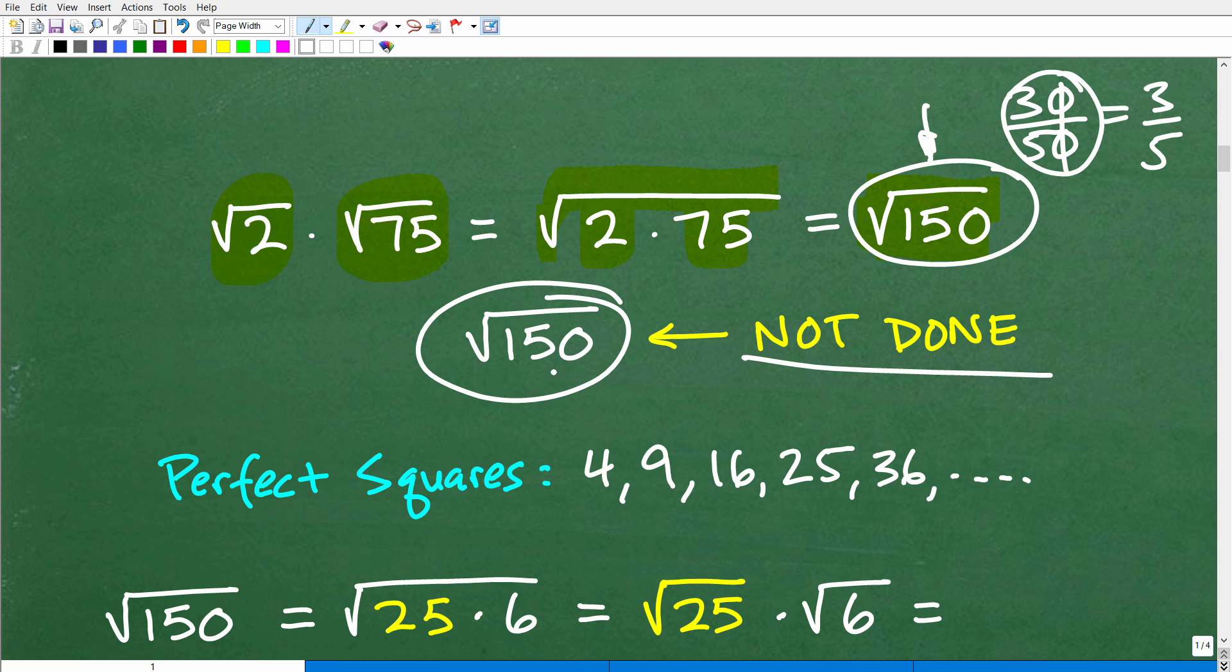And to determine whether we can simplify this, you need to be thinking about perfect squares. So these are perfect squares: 4, 9, 16, 25, 36. Now why are these perfect squares? Because all these numbers, when we take the square root of them, we end up with these lovely numbers like 2, 3, 4, 5, etc. So when we square these nice integer values, these are perfect squares.